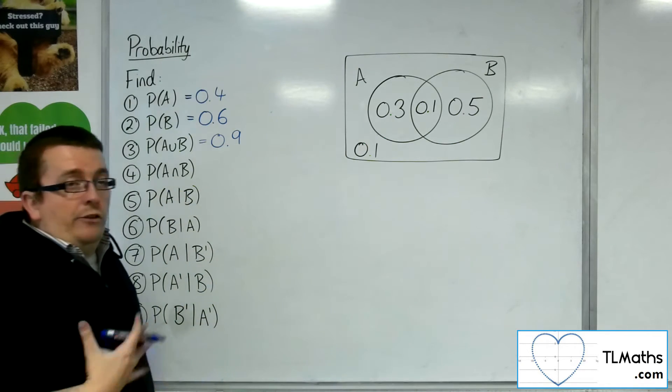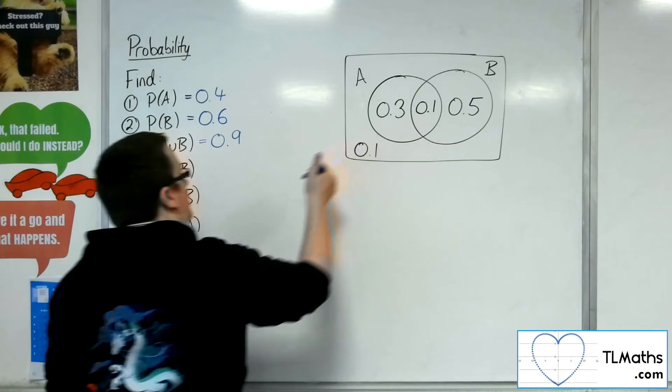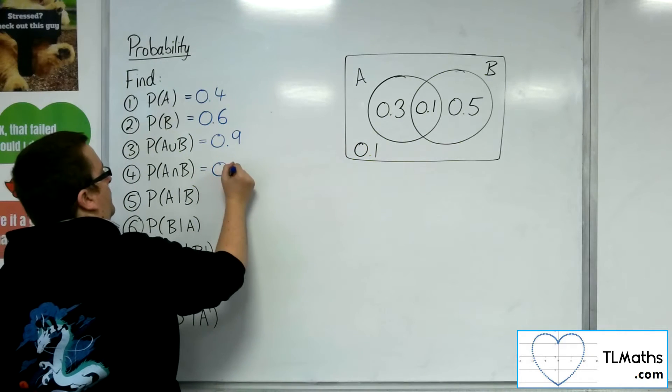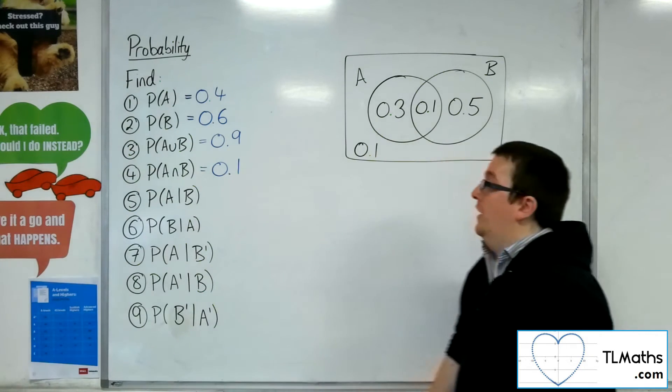The intersection of A and B is where they overlap, and so that's just the 0.1. Okay, so they're the basic probabilities out of the way.